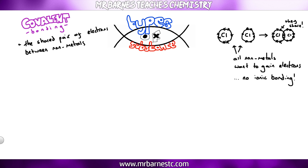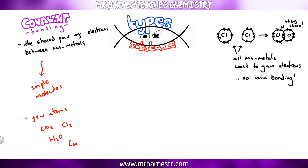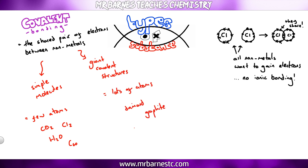There are two different types of covalent compounds: simple covalent molecules and giant covalent molecules. Simple covalent molecules only contain a few atoms — CO2 has three atoms, H2O has three atoms, Cl2 has two atoms, C60 has 60 atoms. Usually if it's less than 100 atoms we say it's simple covalent. Giant covalent has thousands of atoms, for example diamond, graphite, and graphene — those are the three main ones you need to know for the exam.